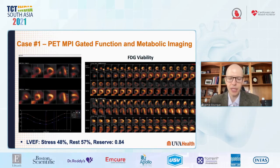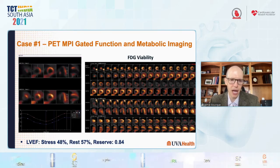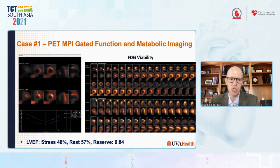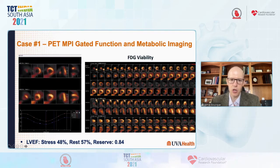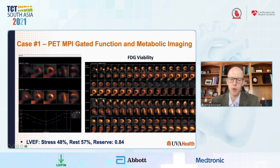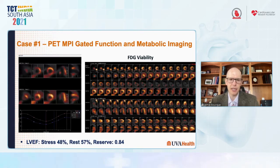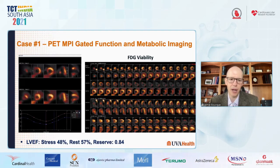The patient had FDG viability imaging performed at the same time. The FDG images showed a substantial mismatch where there is FDG uptake in areas where there was decreased N-13 ammonia uptake, and this was consistent with the presence of myocardial viability.